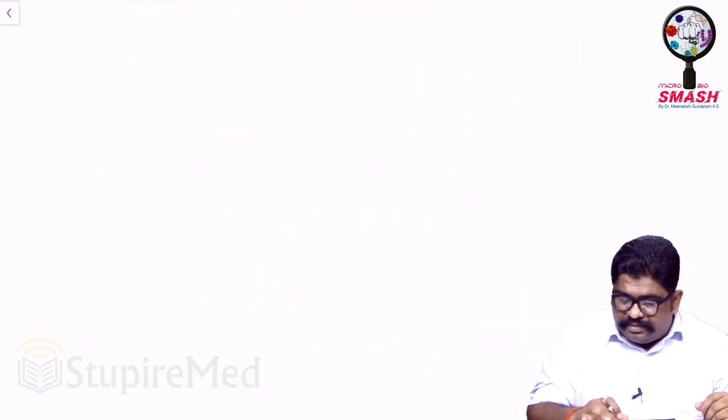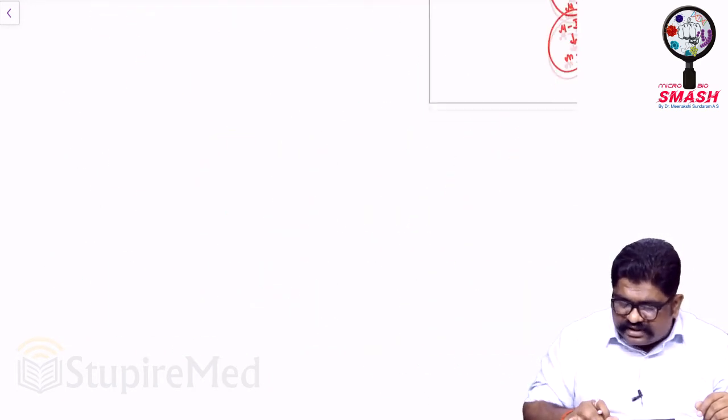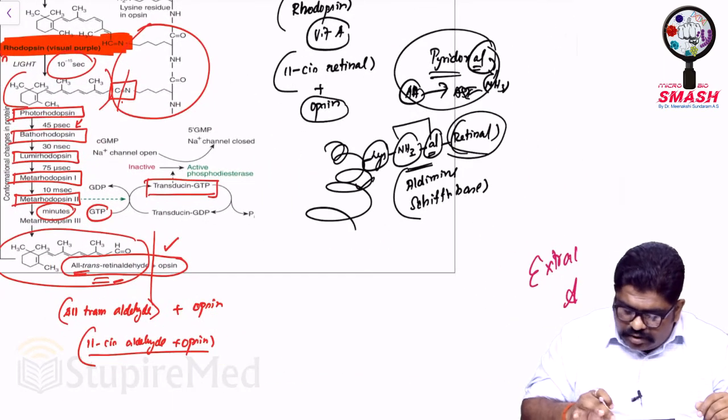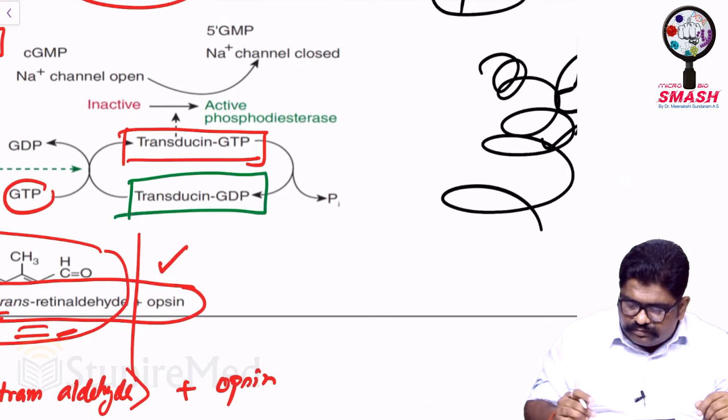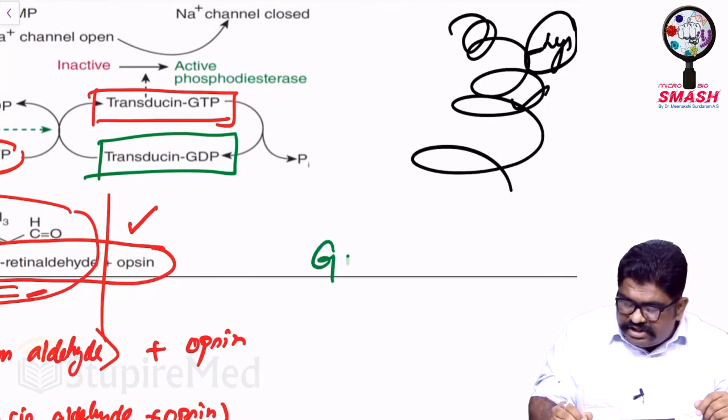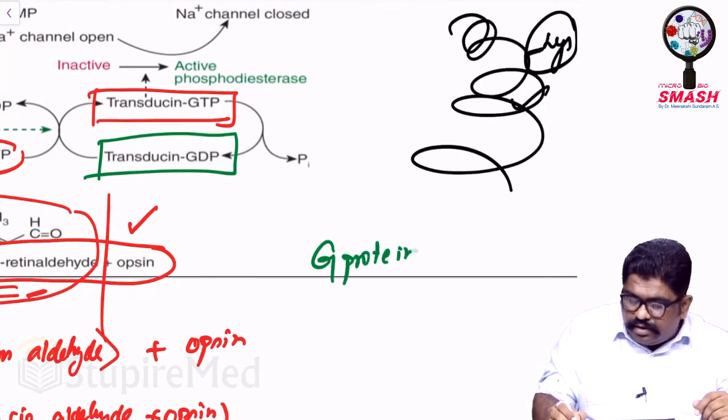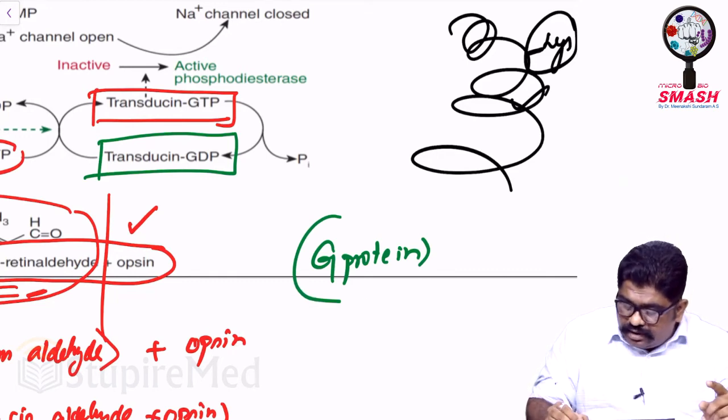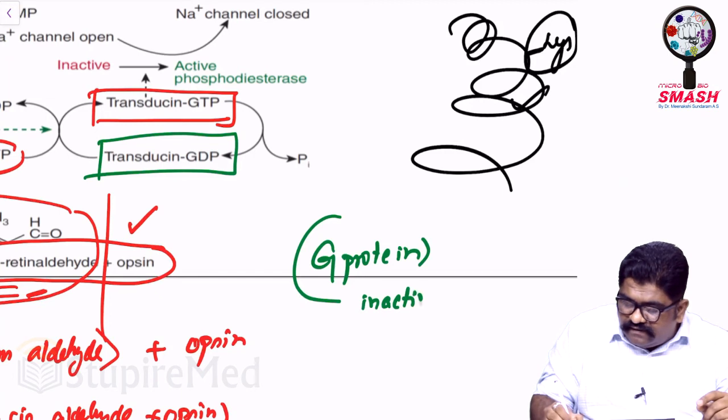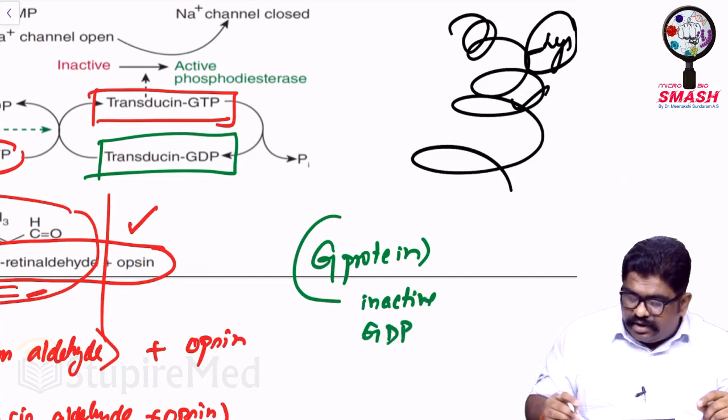After discussing that part, we're coming here. Look at this: the transducin is actually the G protein. Transducin is nothing but the G protein. This G protein is inactive when it is bound to GDP.